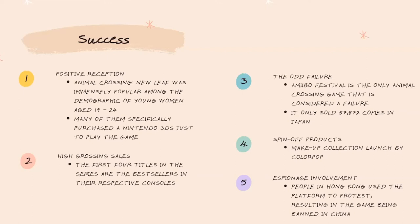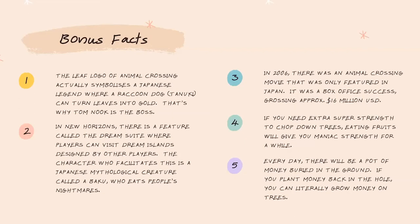The first four titles in the series are the best sellers in their respective consoles - a major achievement. The odd failure is Amiibo Festival, a spin-off and the only Animal Crossing game considered a failure, selling only 872 copies in Japan. As a spin-off product, Color Pop recently launched an Animal Crossing makeup line, which is popular among YouTubers. On the espionage side, people in Hong Kong used the platform to protest, resulting in the game being banned in China - though people are still selling third-party copies, so players still play it, just illegally.